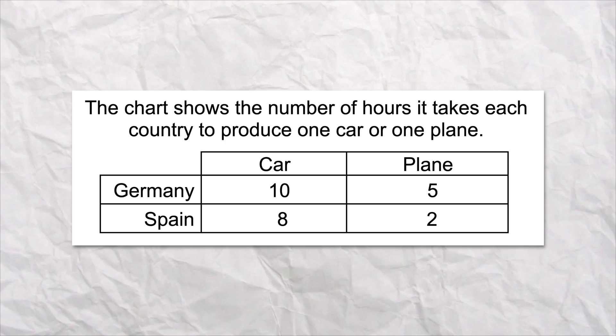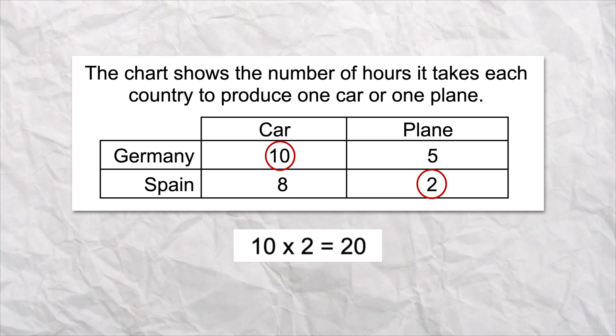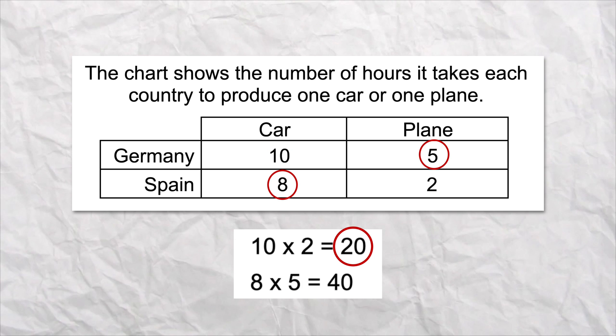Now notice all of these so far have been output questions. For input questions — when they give you the number of hours, workers, or machines — you can use the same strategy, just pick the lower number. For this one, the chart shows the number of hours it takes for each country to produce one car and one plane. This is an input question. 10 times 2 is 20. 8 times 5 is 40. Pick the lower number. Germany should produce the cars. Spain should produce the planes. Dang, it's dirty.